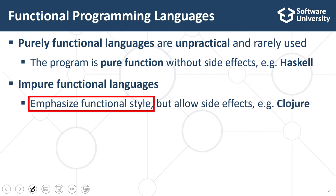These languages emphasize functional style, however, they allow side effects. An example of impure functional language is Clojure, which is not very popular in practical software development.